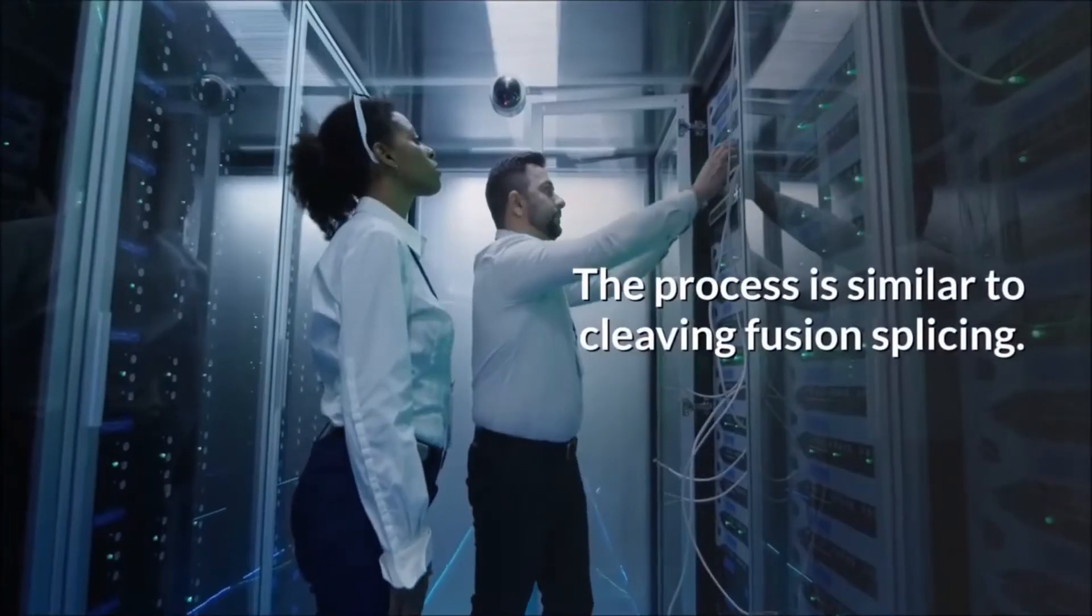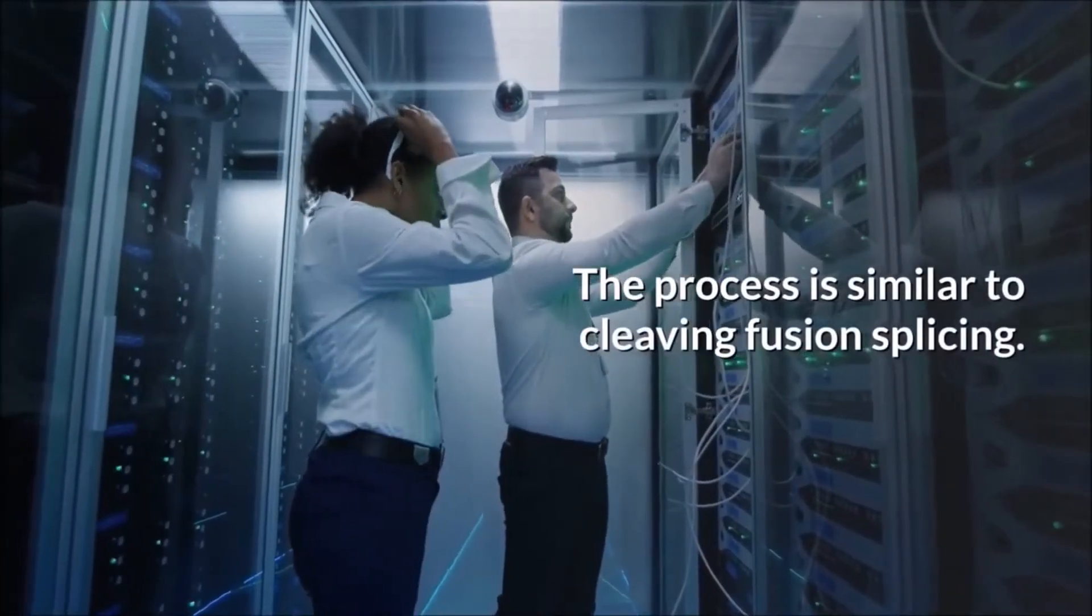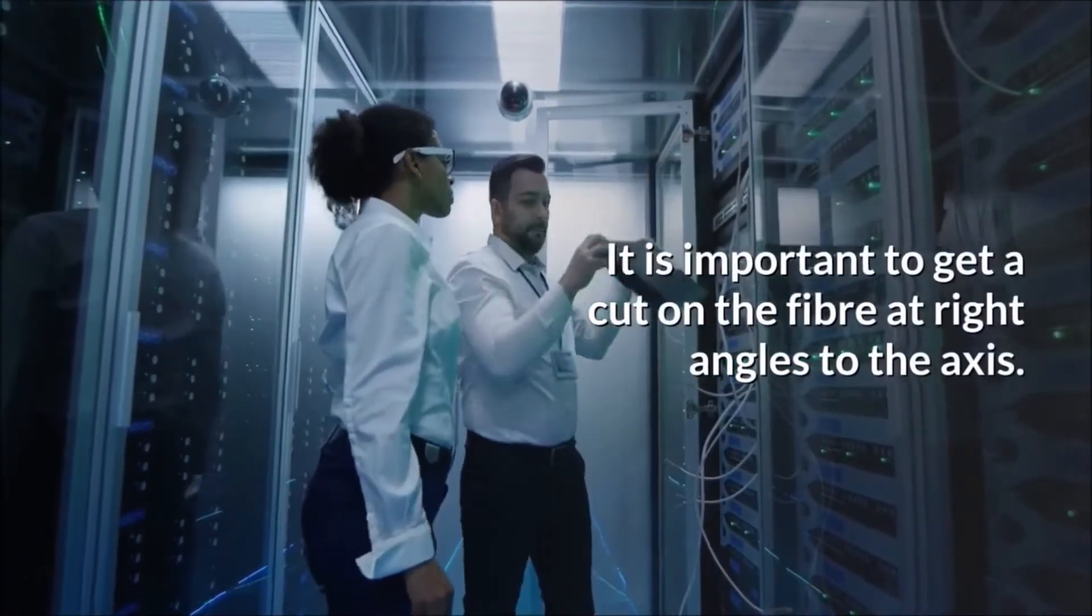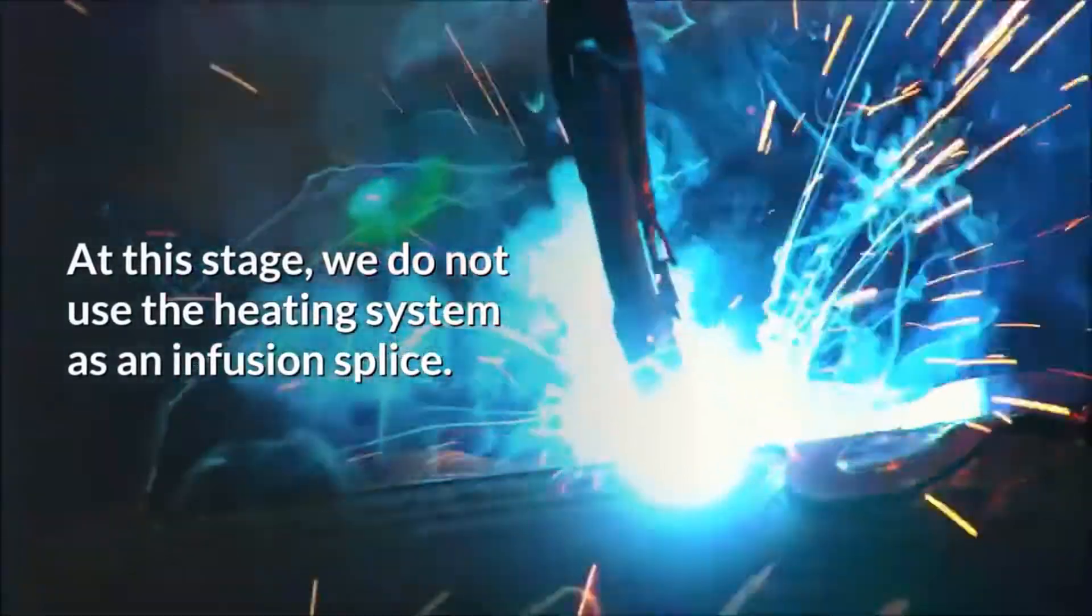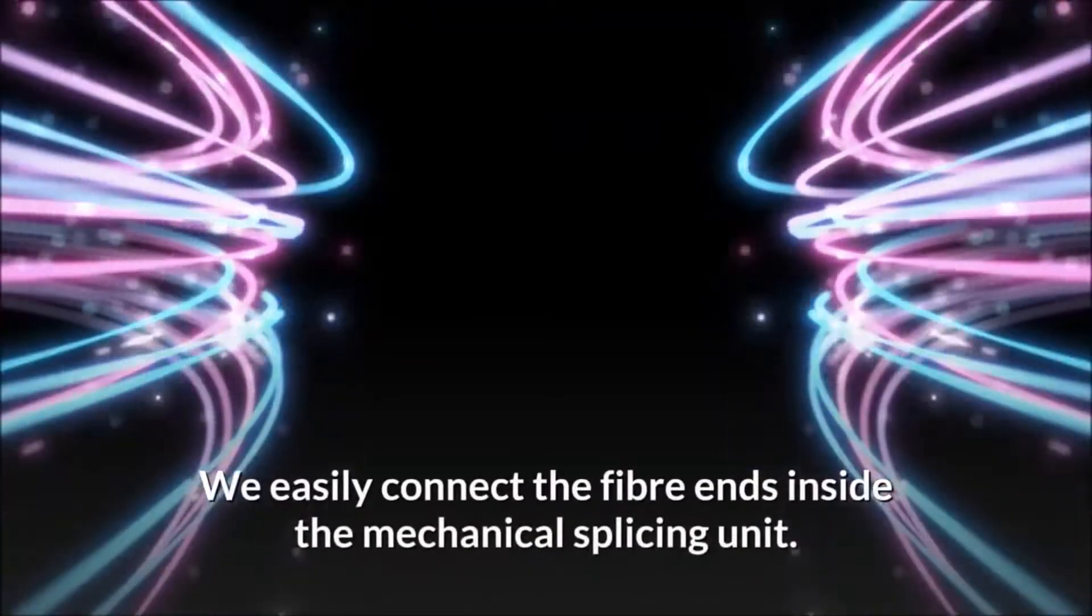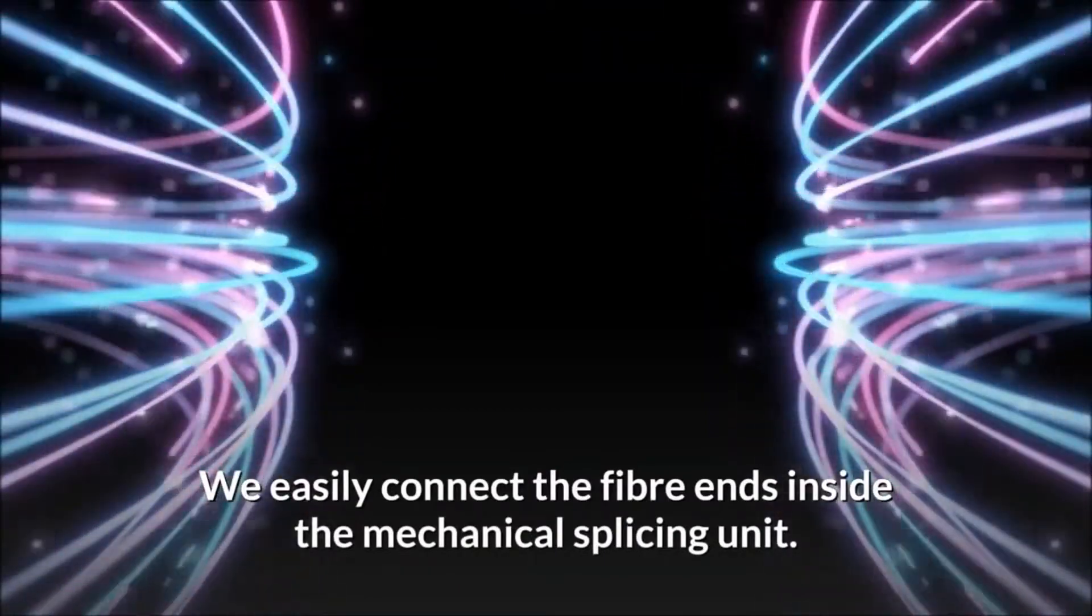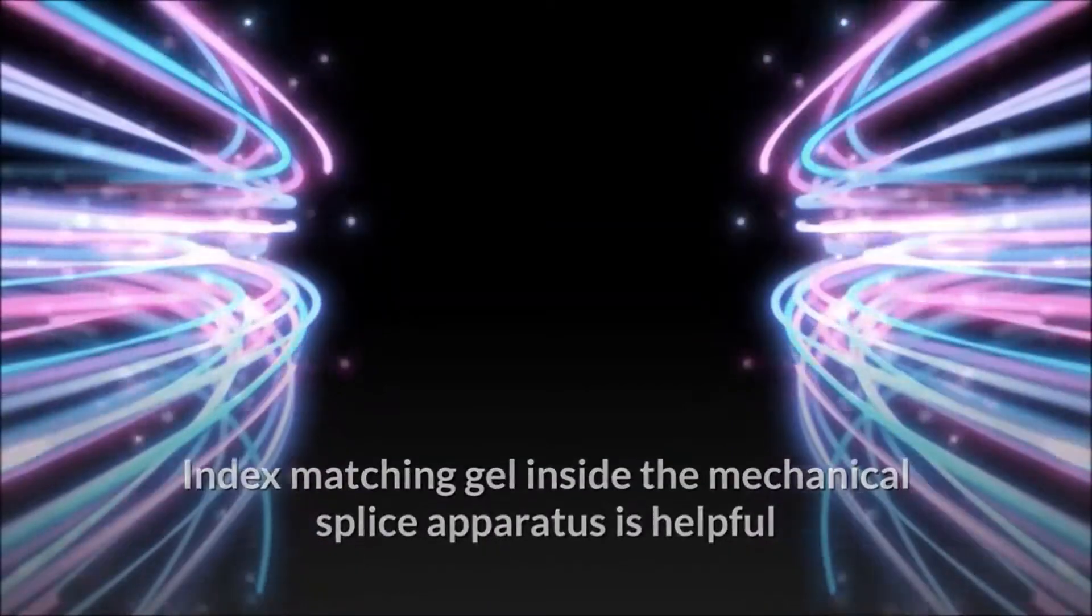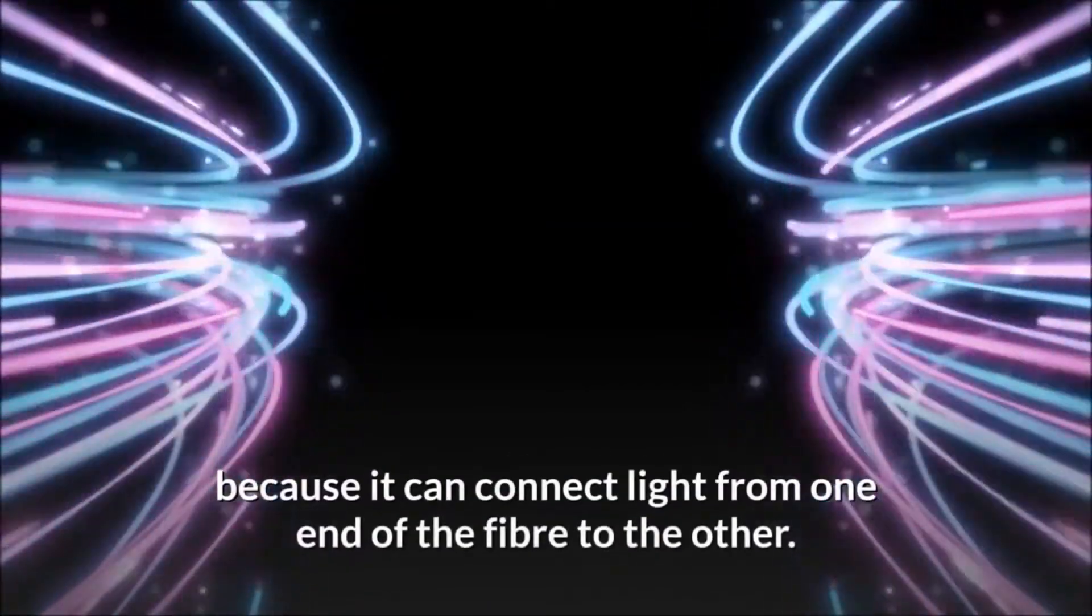Step 2: The process is similar to cleaving fusion splicing. It is important to get a cut on the fiber at right angles to the axis. Step 3: At this stage, we do not use the heating system as in fusion splice. We easily connect the fiber ends inside the mechanical splicing unit. Index matching gel inside the mechanical splice apparatus is helpful because it can connect light from one end of the fiber to the other.